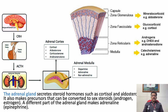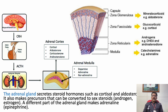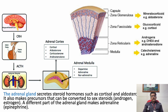Steroid is a hormone which is produced in our adrenal gland. There are different types of steroids: mineralocorticoids like aldosterone, glucocorticoids like cortisol, androgens, and catecholamines. We are going to discuss about mineralocorticoids and glucocorticoids. Others are also steroids but we are not going to discuss them because their actions are entirely different.